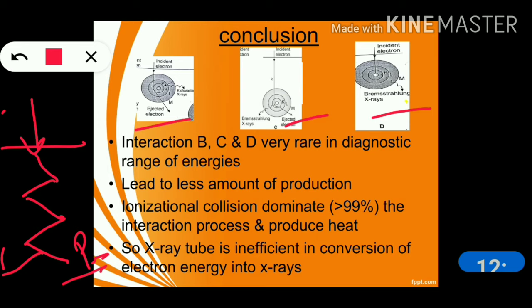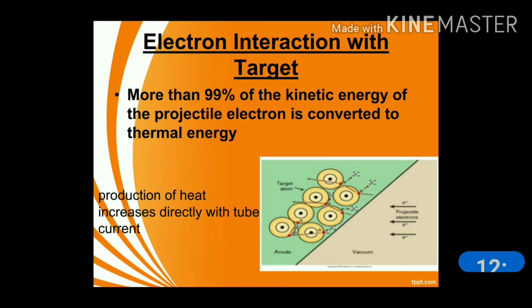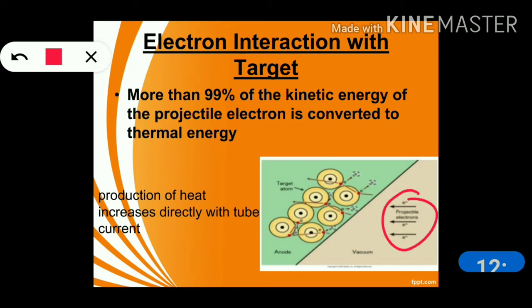The X-ray tube is not very efficient in converting electron energy into X-rays, but we do not have any other alternative, so we continue using it. More than 99% of the kinetic energy of these projectile electrons is converted into thermal energy. The production of heat increases directly with the tube current. Outer-shell ionization appears as heat, and interactions with the nucleus, inner shell, and outer shell all occur — but all outer-shell interactions appear as heat.